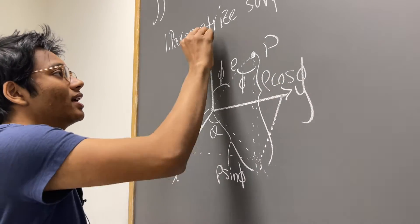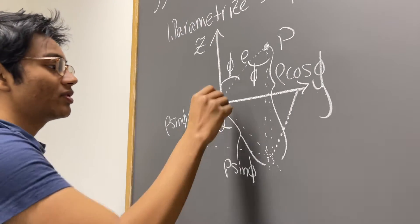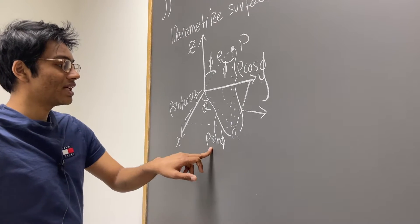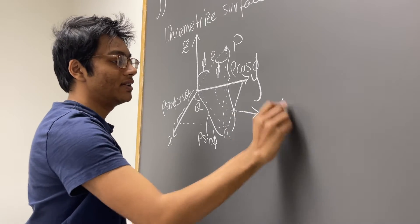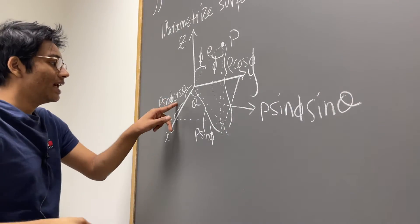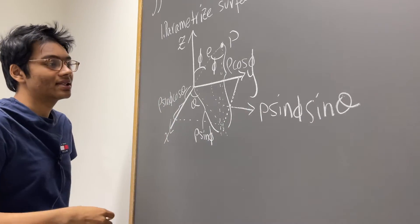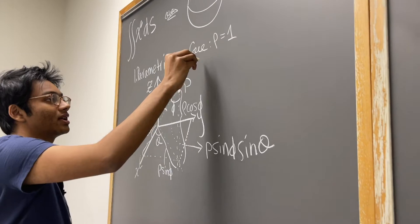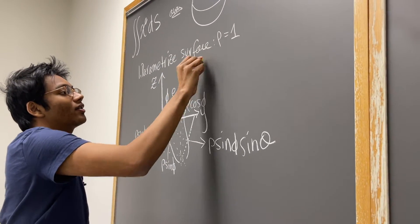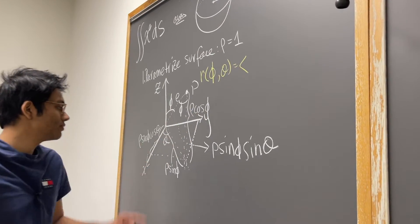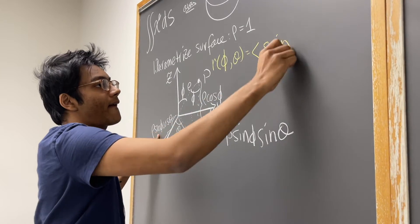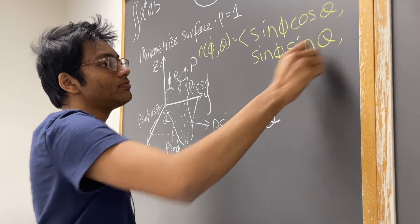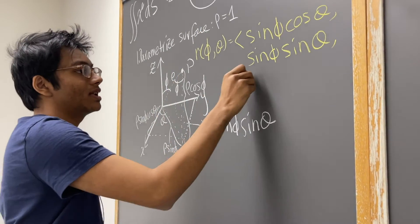This is your x projection. For your y projection, this is rho sine phi sine theta. You can check: x has cosine theta, y has sine theta, which all makes sense. Since this is a unit sphere, rho equals one, so our parametrization r of phi, theta is going to be the x coordinate, y coordinate, and z coordinate with no rho since that's just one.